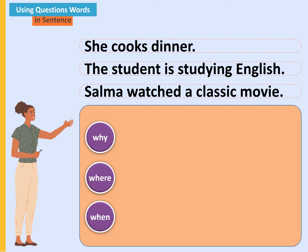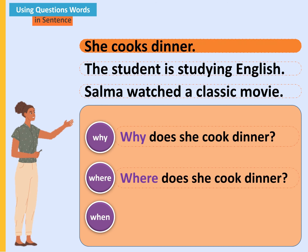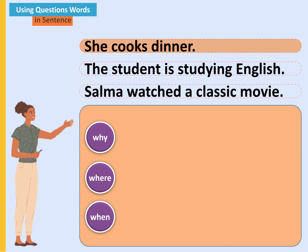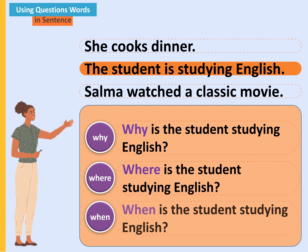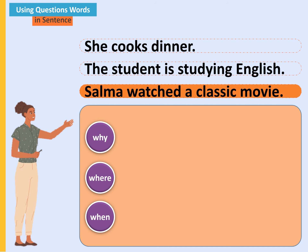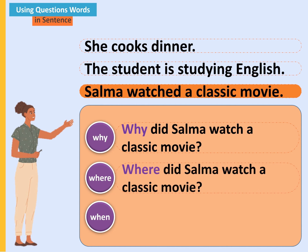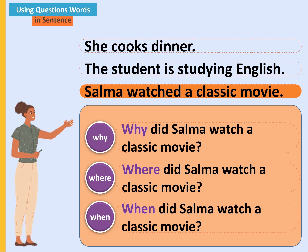لنقم بتمرين بسيط: نصوغ أسئلة انطلاقاً من الجمل التالية باستعمال why، where، وwhen. الأسئلة المصاغة من الجملة الأولى: why does she cook dinner، where does she cook dinner، when does she cook dinner. من الجملة الثانية: why is the student studying English، where is the student studying English، when is the student studying English. من الجملة الثالثة: why did Selma watch a classic movie، where did Selma watch a classic movie، when did Selma watch a classic movie.